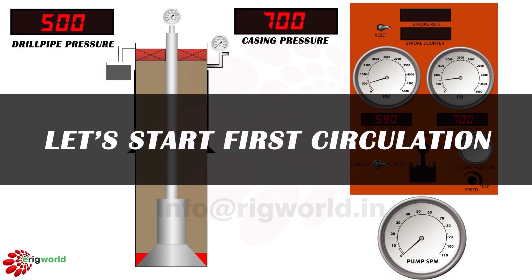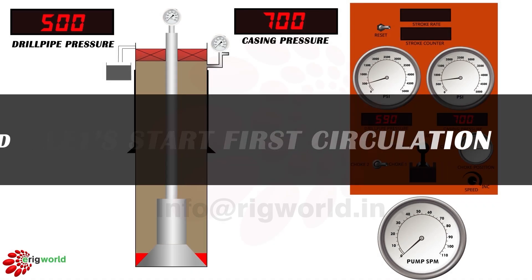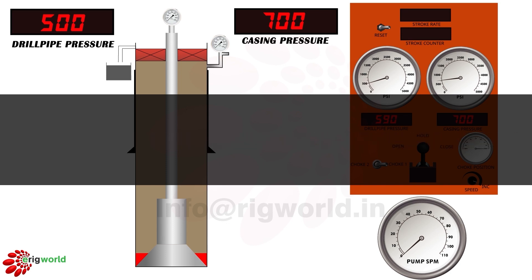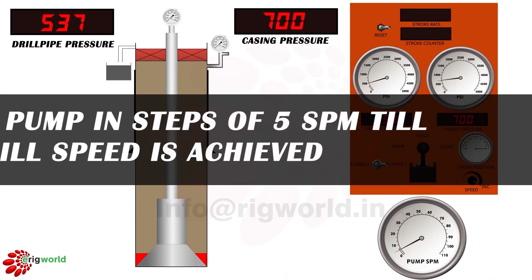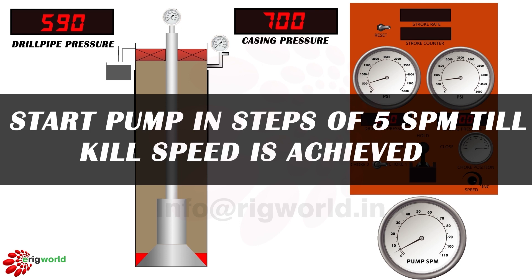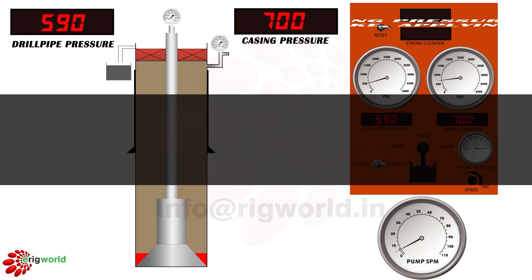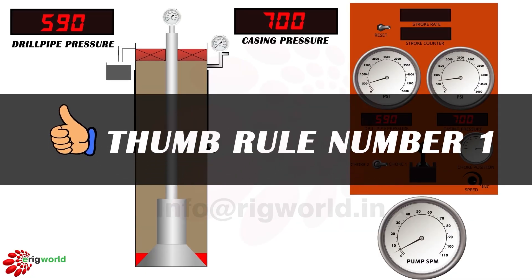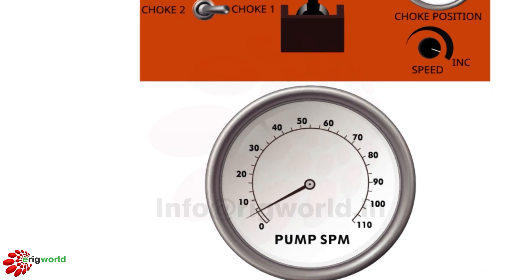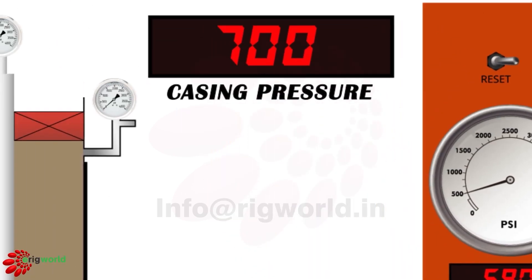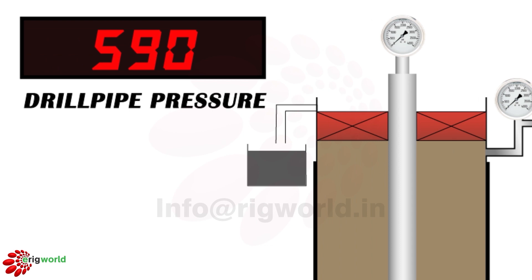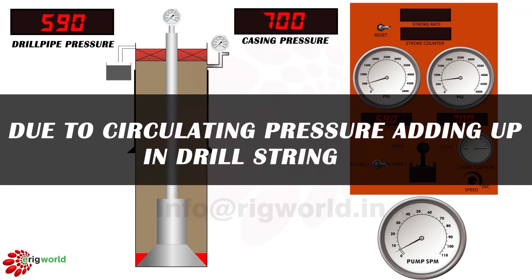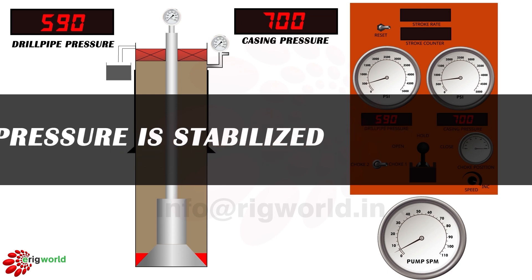Let's start the first circulation. Since we will circulate the same drilling mud, the lineup remains the same. Step one: start the pump in steps of 5 SPM until kill speed is achieved, keeping casing pressure constant at 700 psi with the help of the choke — applying thumb rule number one. At 5 SPM, keeping casing pressure at 700 psi constant, drill pipe pressure increases to 590 psi due to circulating pressure adding up in the drill string.